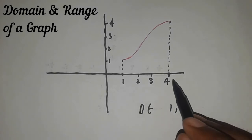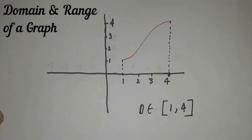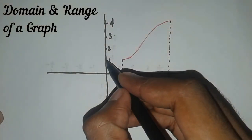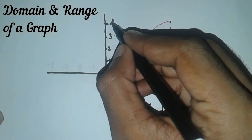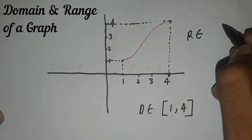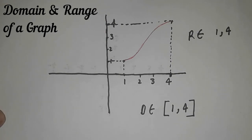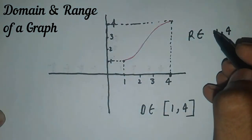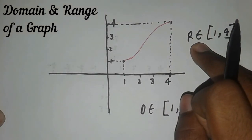We are getting the graph at one and four, so we will use closed brackets. For the range, we see the graph from bottom point to top point. The bottom point is one and the top point is four, so its range will be [1, 4]. Again, we are getting the values at one and four, so we use closed brackets. That is the domain and the range of this graph.